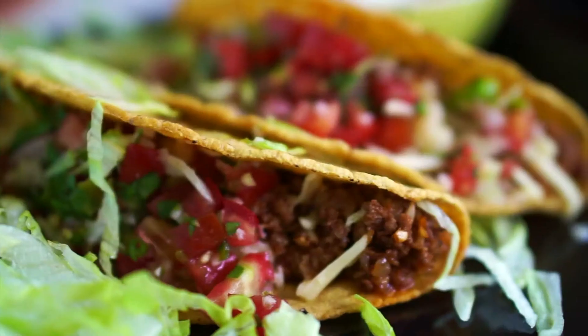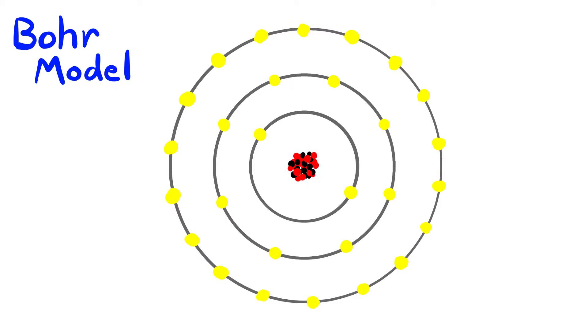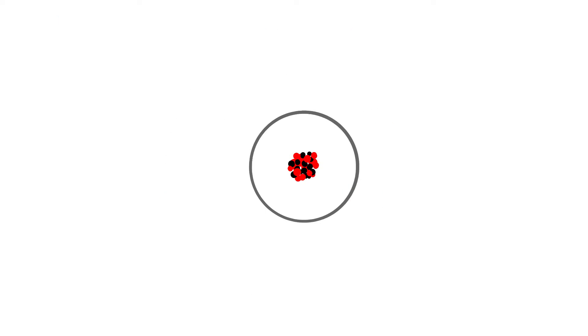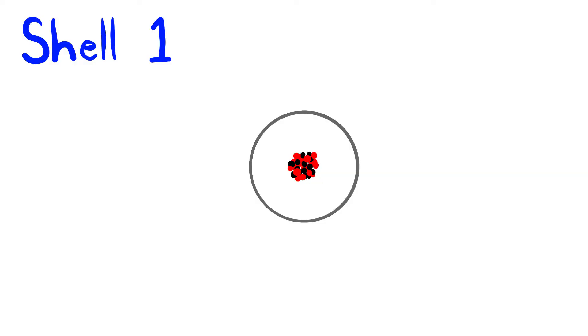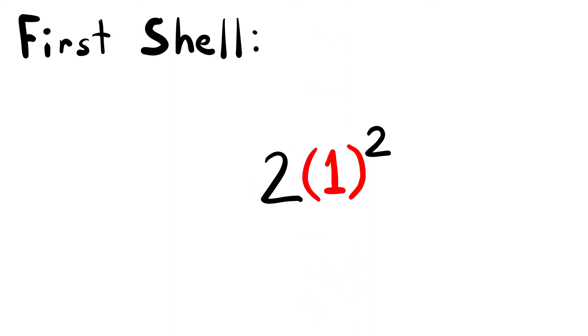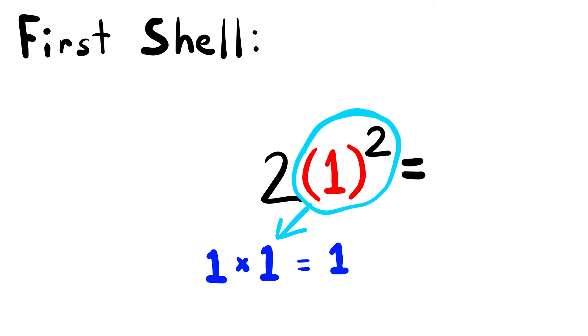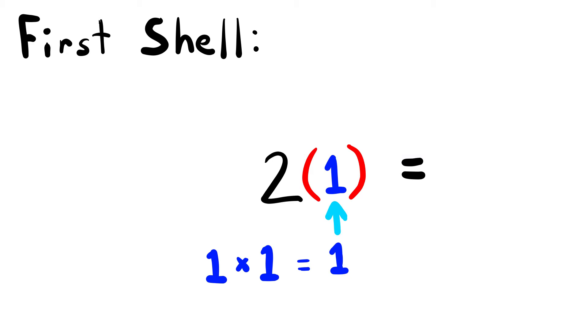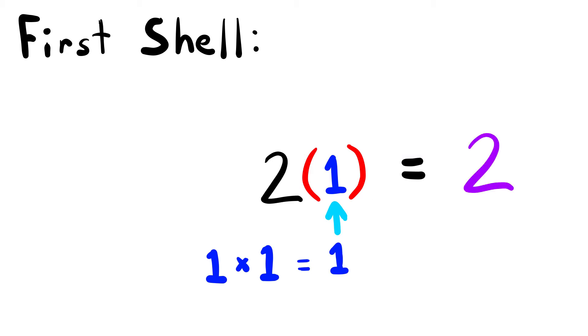First, we need to talk about the shells. In the Bohr model of the atom, the protons and neutrons exist in the nucleus — that's the middle — and the electrons exist in specific shells or energy levels around the nucleus. We refer to these shells from the inside out as shell 1, shell 2, and so on. Each of these shells can only contain a certain amount of electrons, and they follow a pattern. N stands for the shell number, so if we're talking about the first shell, we insert 1 for the value of n. 1 to the power of 2 equals 1, and 1 times 2 equals 2, so our first shell can contain 2 electrons.